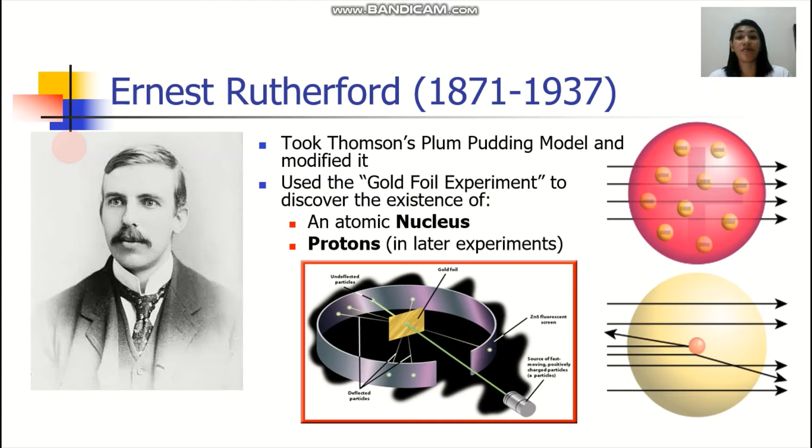Next, we have Ernest Rutherford. He actually took Thompson's plum pudding model and modified it. He used another experiment, the gold foil experiment, to discover the existence of an atomic nucleus and protons. This was proven in his later experiments.